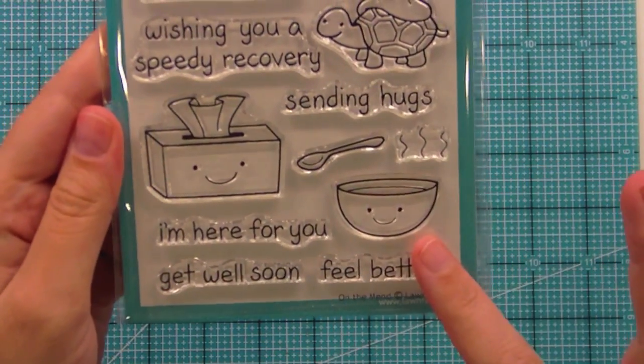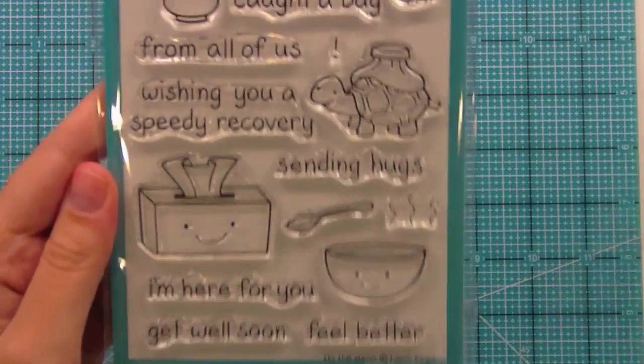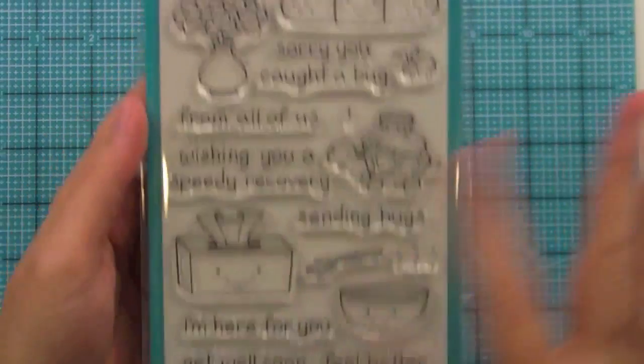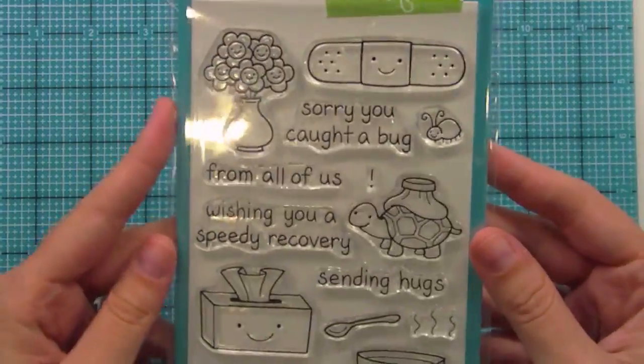We have different types of sentiments like 'I'm here for you,' 'sending hugs,' 'get well soon,' 'feel better,' depending on what the situation might be. All these different ways that you could use this set and it would just be so adorable.